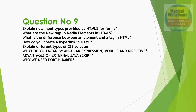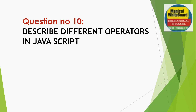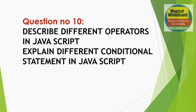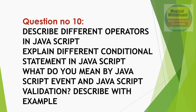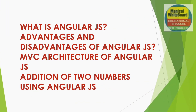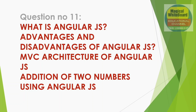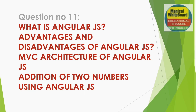Why do we need port numbers? How does the IP address and port number work together? Question number 10: Describe different operators in JavaScript in detail. Explain different conditional statements with examples and syntax. What do you mean by JavaScript events and JavaScript validation — describe with examples. Question number 12 (Angular JS): Advantages and disadvantages of Angular JavaScript, MVC architecture, and addition of two numbers using Angular JavaScript.